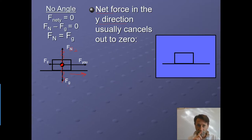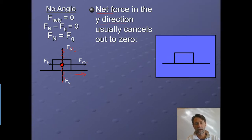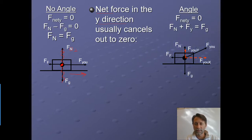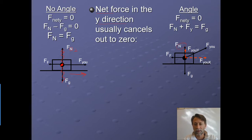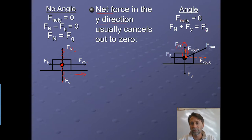If I'm pulling at an angle, the problem changes slightly. I still have gravity, the normal force, and friction, but now I'm pulling at an angle. When pulling at an angle, I'm not only pulling in the X direction — I'm also lifting up on it a little bit, which means the normal force doesn't have to push up as much. So the normal force plus the Y component of my pull has to equal the force of gravity — the up forces equal the down forces.